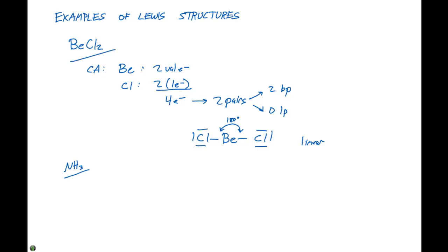For ammonia, our central atom is gonna be nitrogen because it only shows up once in our formula. For nitrogen, we have five valence electrons. Hydrogen is gonna contribute one electron to the central atom, and we have three of them.